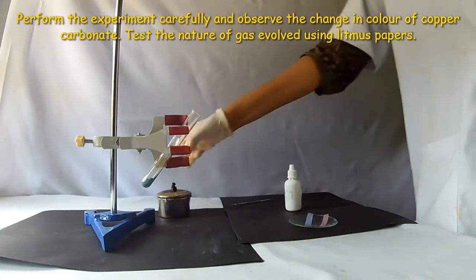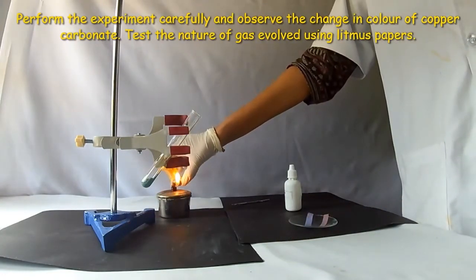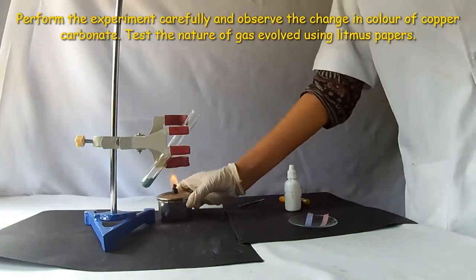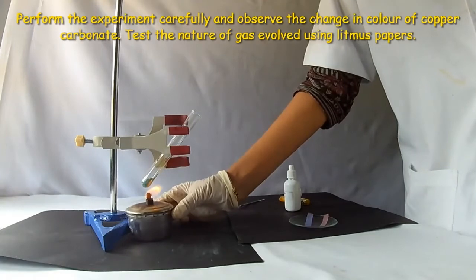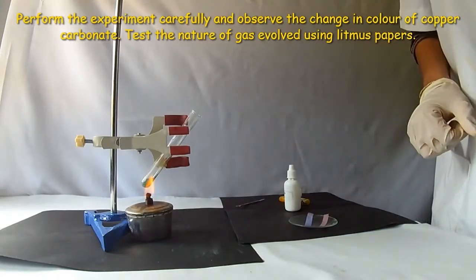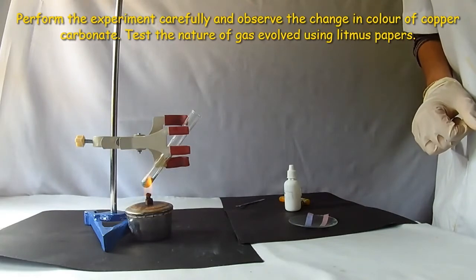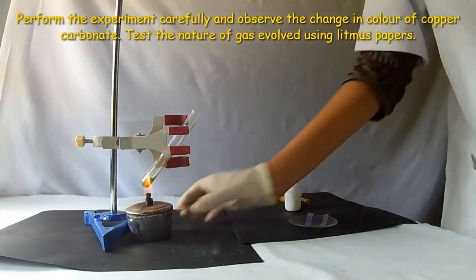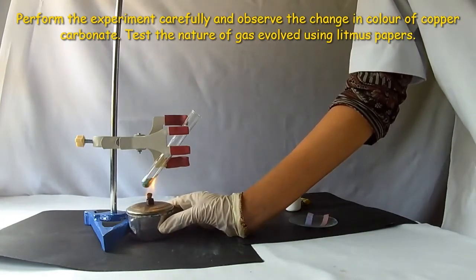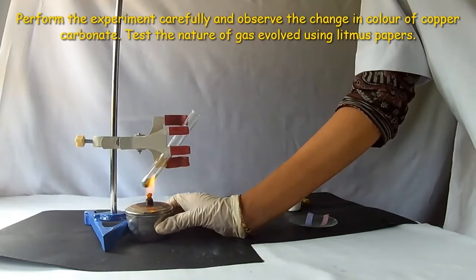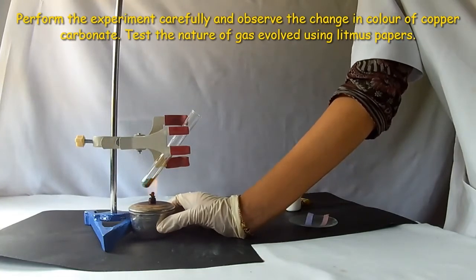Take a spirit lamp and light it with the help of lighter. Place it under the test tube correctly so that the salt gets heated properly. Perform the experiment carefully. Observe the color change in the salt.